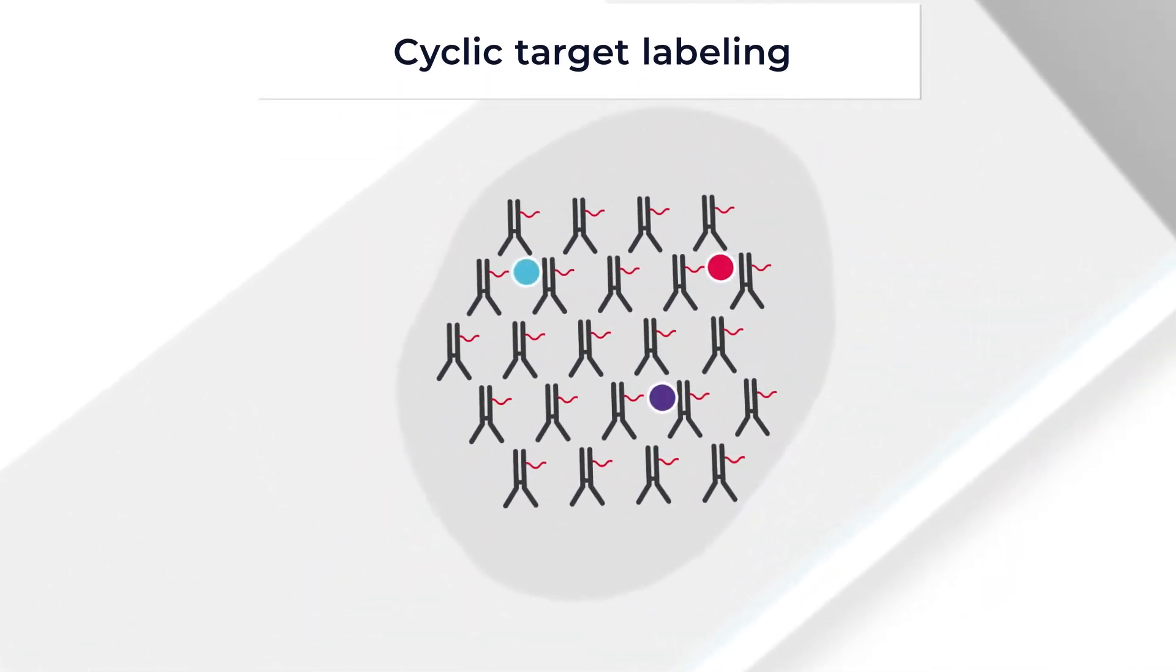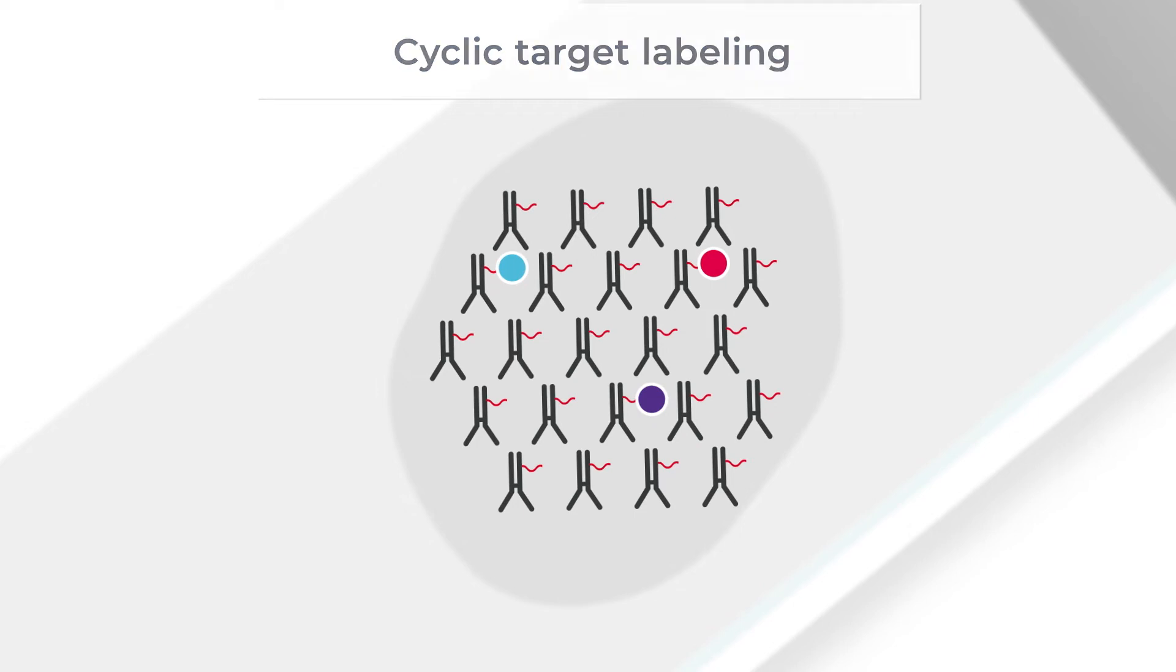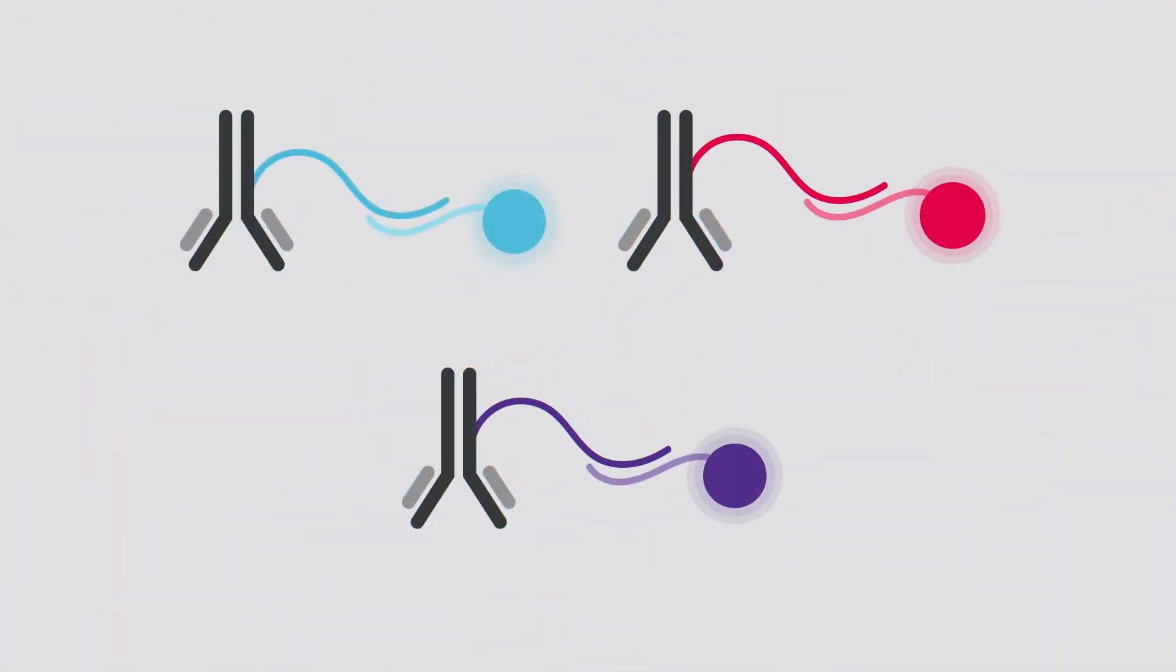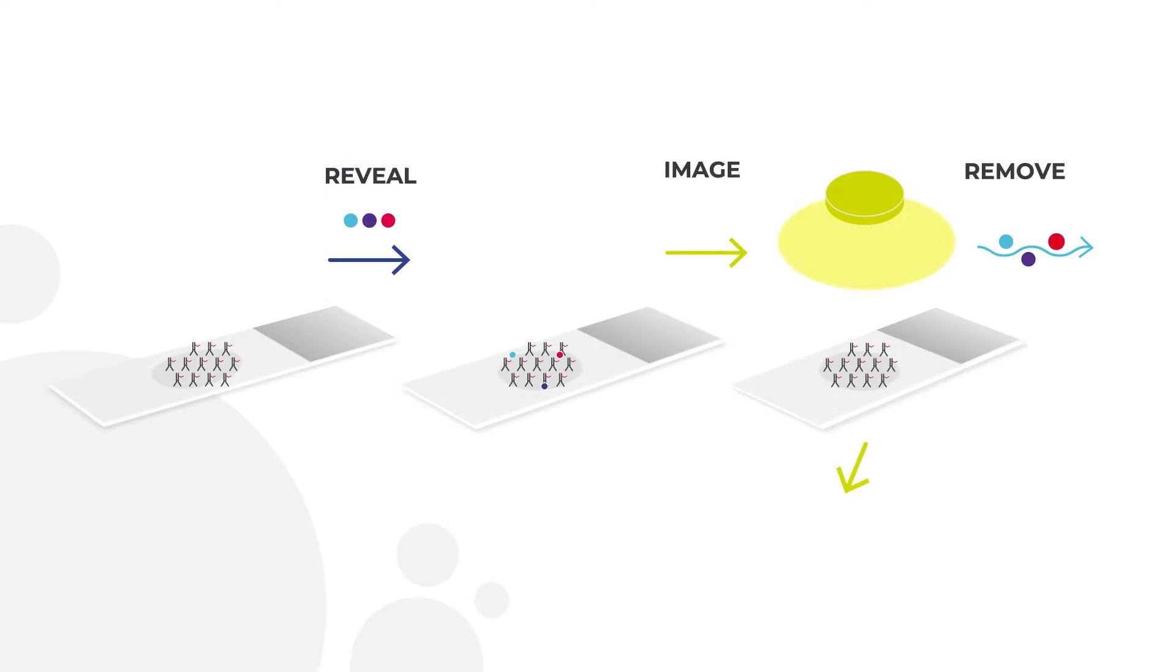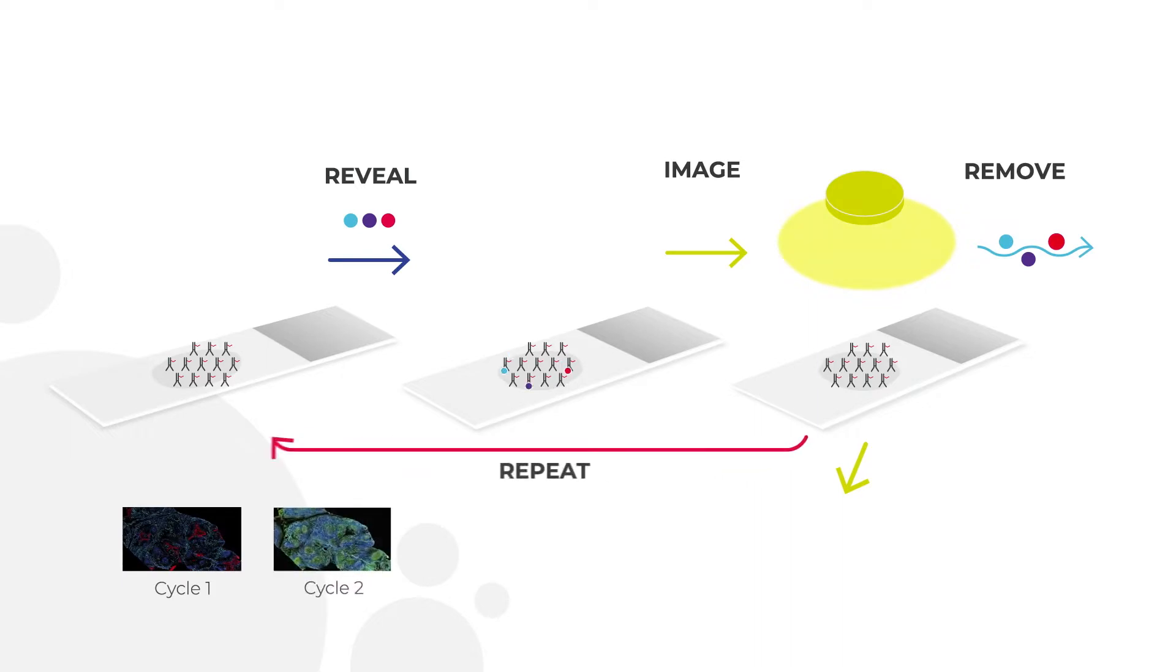The PhenoCycler multiplexing platform uses fluorescently conjugated barcodes to label the antibody stain tissue. Through a cyclical process of reveal, image, remove, three biomarkers are detected during each fluorescent scan.